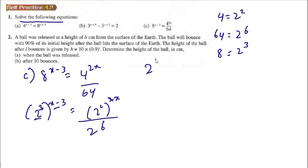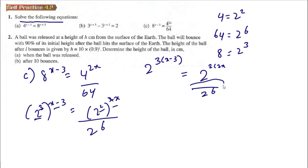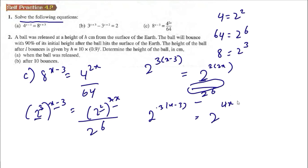With base 2: 3(x-3) equals 4x minus 6, because when we divide with the same base we subtract the powers — 2x times 2 gives 4x, and then minus 6 from dividing by 2^6. When we have the same base we can cut it and work with the exponents.